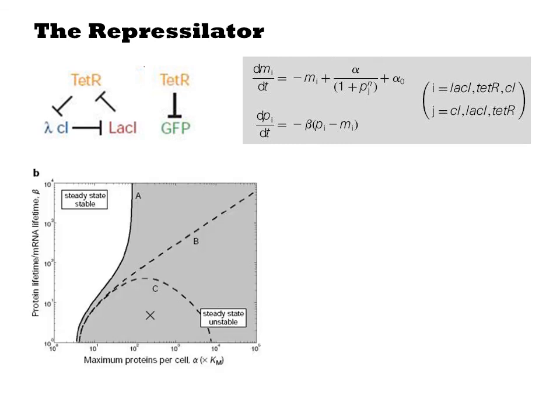When they scan through the parameter space, they find that different values of alpha and beta terms give rise to different behavior. There are some regimes in which the transcription factor dominates, leading to stable states. For a specific window of parameters, the system is unstable and will oscillate.